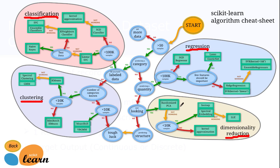If your data is in a very high-dimensional space, you can use dimensionality reduction techniques such as Isomap, kernel approximations, spectral embedding, and randomized PCA — which is Principal Component Analysis. You apply these on top of your data so that the dimensions are reduced but the quality of the data is still preserved.